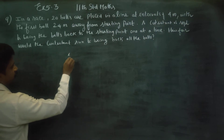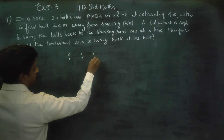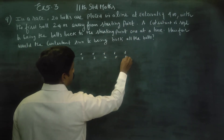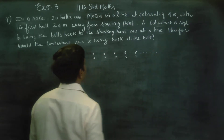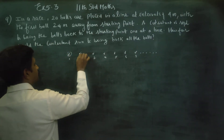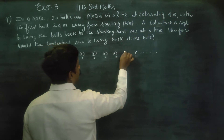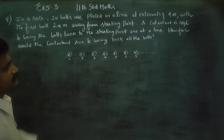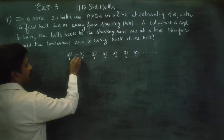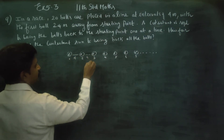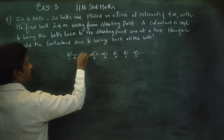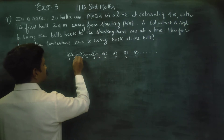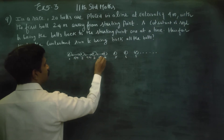In that one, there is a first ball, second ball, third ball, fourth ball, fifth ball, sixth ball, seventh ball, and it goes on like this up to 20 balls. One ball can be 4 meters apart — 4 meters, 4 meters. The distance between two balls is 4 meters.